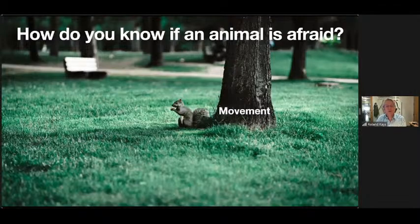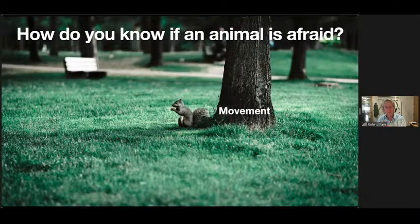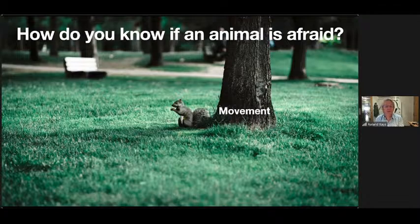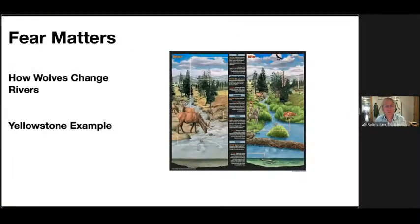We can also tell by movement and where animals position themselves. A key factor for squirrels is how far they are from a tree. A squirrel that found food and sat right next to the tree — if a dog shows up, it's up the tree instantly. But if it were 10, 20, 30 feet away there'd be more risk, and it will make different feeding decisions because it knows it's more at risk. We can quantify these features to see how animals use the landscape.